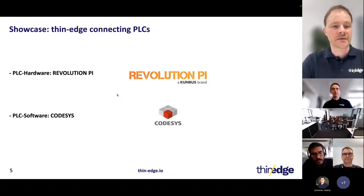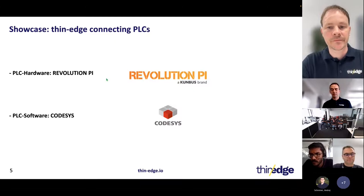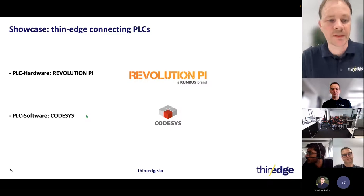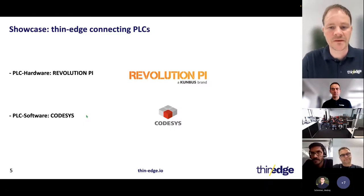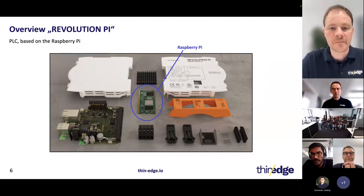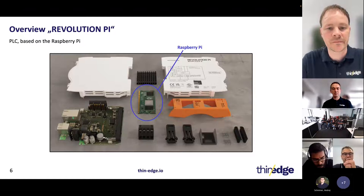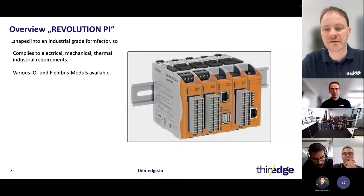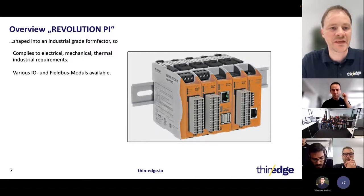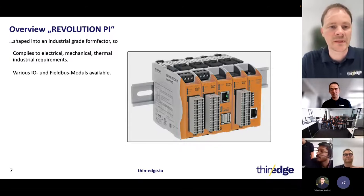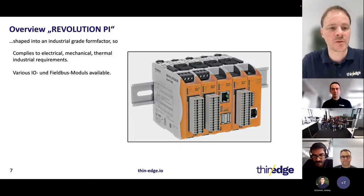For PLC hardware, we are using the Revolution Pi — a Raspberry Pi-based PLC. As PLC software, we use CODESYS, which besides Siemens is the absolute leader in the automation industry. The Revolution Pi is based on the Raspberry Pi, with added electronics and mechanics to make it fit for industry — shaped into an industrial-grade form factor that complies with electrical, mechanical, and thermal industrial requirements, plus various IO and field bus modules ready for industrial automation.